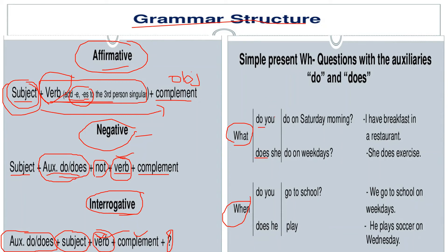We need to understand when we use 'do' or 'does.' With I, we, you, and they, we use 'do' as an auxiliary verb. And where do we use 'does'? With singular nouns like she, he, it, and any other singular name.